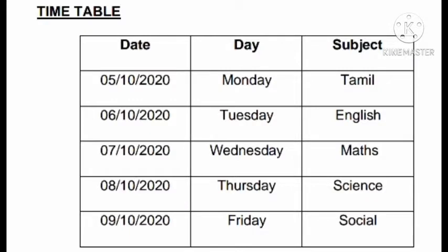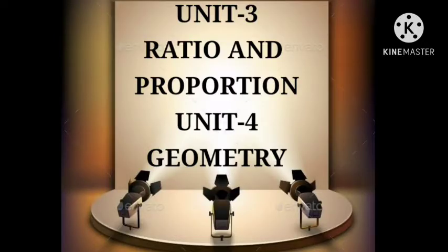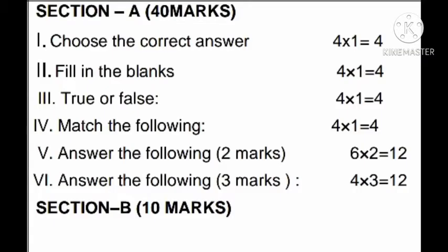Already unit test 3 portion is given along with the timetable. The portions are Unit 3 - Ratio and Proportion, exercises 3.3, 3.4 and 3.5, and Unit 4 - Geometry. The question pattern is: choose the correct answer 4 marks, fill in the blanks 4 marks, true or false 4 marks, match the following 4 marks - totally 16 marks for one-word answers in Section A. Be thorough in all one-word answers, especially in book back and summary points. For 2 marks and 3 mark questions, work out all exercise and example problems. In Section B, application oriented questions will also be included, so be thorough in interior questions as well.